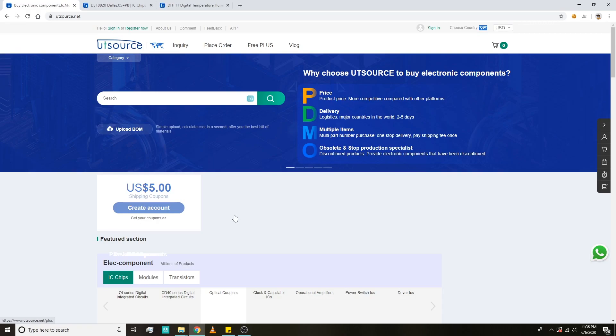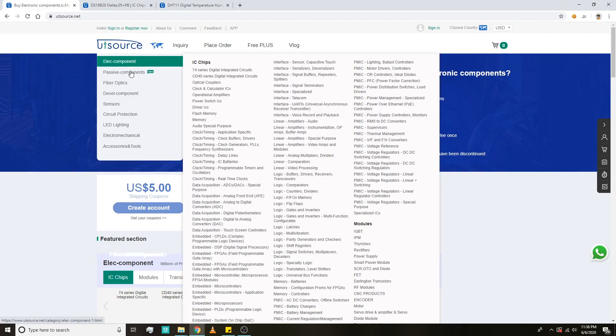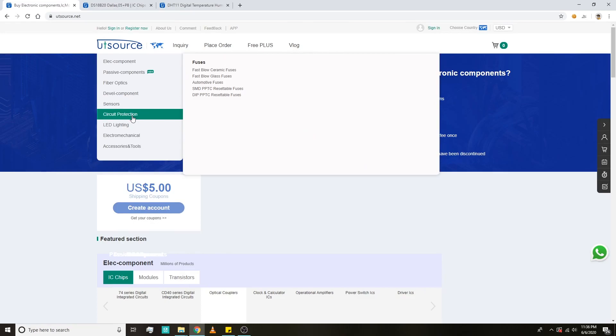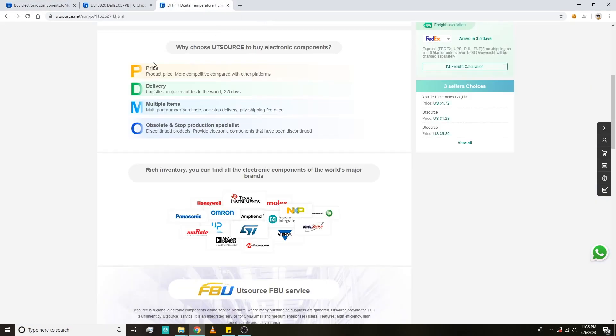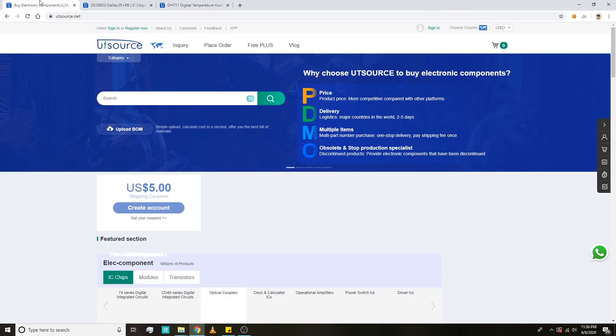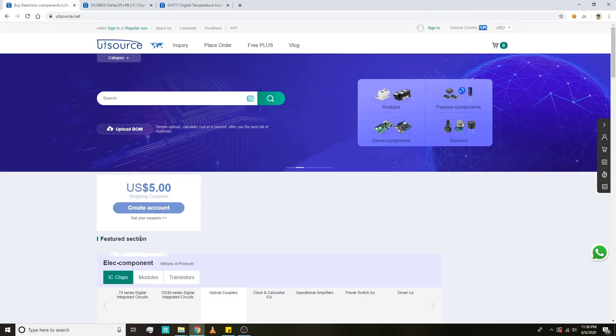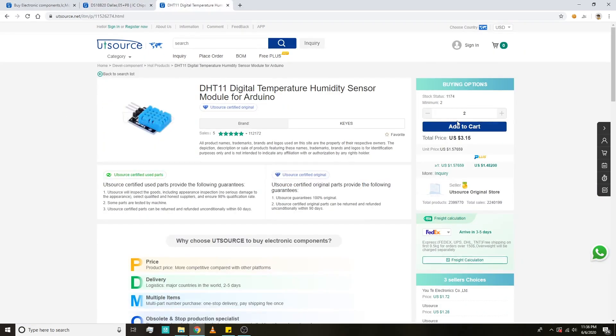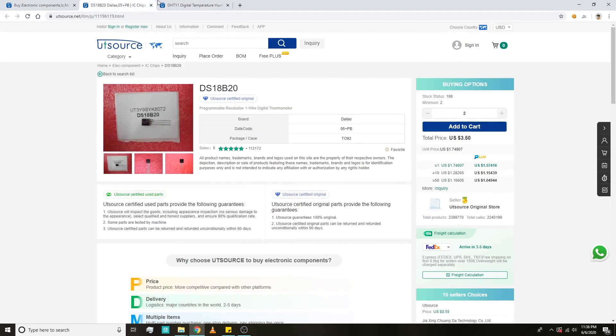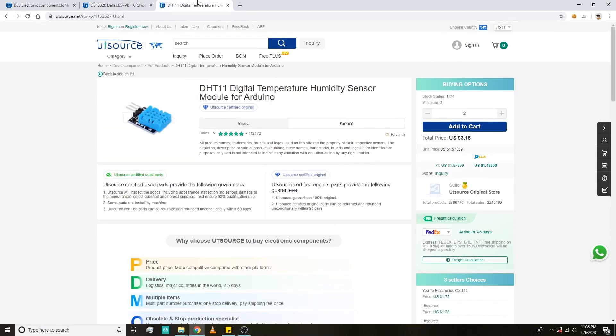I recently came across utsource.net. It is a one-stop site for all your electronic component requirements. They follow PDMO where you can buy multiple parts, even those that are discontinued, for good prices with fast shipping. They offer discount coupons on new orders. You can even find the parts that I am using in my video on utsource.net. All the links will be in the video description box below.